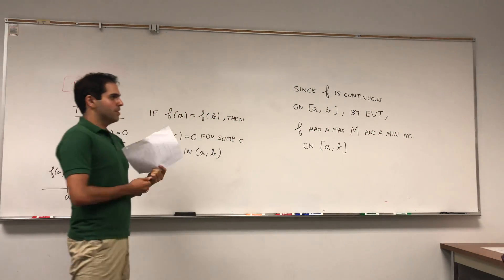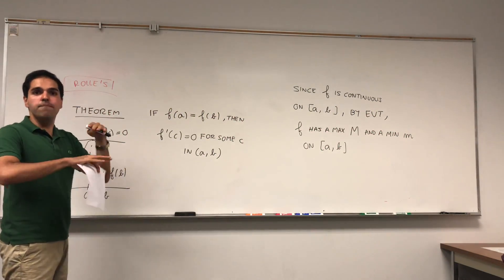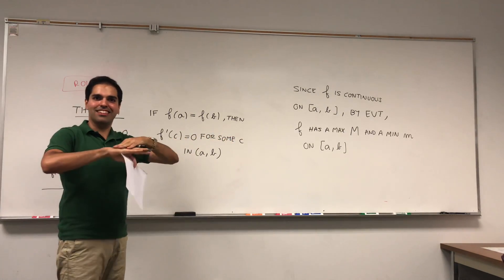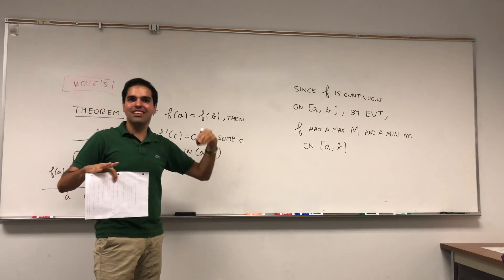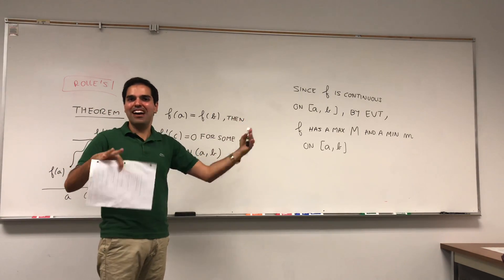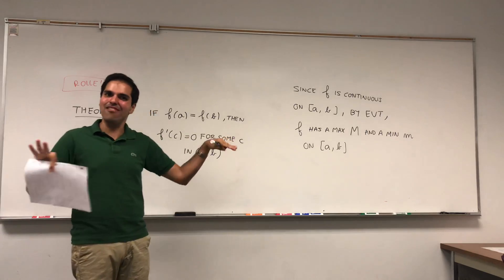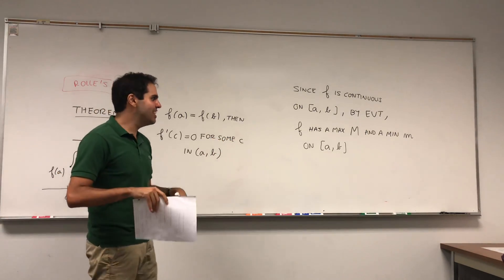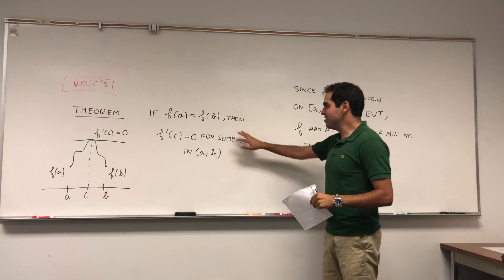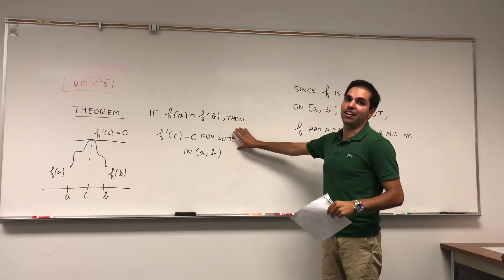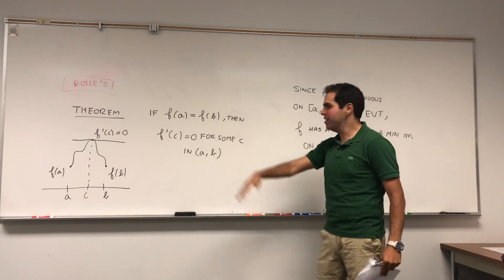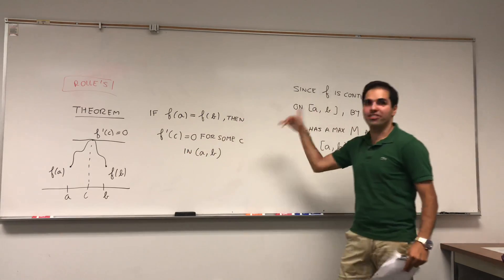First of all, if the max equals the min, it means that f is constant. If the biggest value is 10 and the smallest value is 10, f has to be between 10 and 10, so f has to be the constant function 10. For a constant function, we're done, because the derivative is zero everywhere — so in particular, it's zero somewhere.